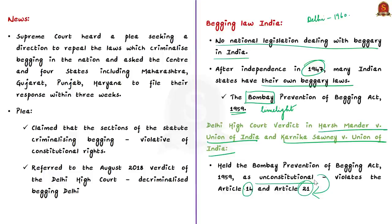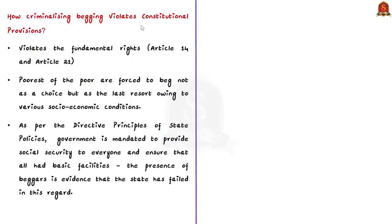Criminalizing begging violates the fundamental rights of the most vulnerable people in our society. It also ignores the reality that the poorest of the poor are forced to beg not as a choice but as a last resort owing to various socio-economic conditions. As a recent plea has noted, it is the government which is mandated to provide social security to everyone and to ensure that all have basic facilities as embedded in the Directive Principles of State Policy of our Constitution. However, the presence of beggars is evidence that the state has failed to provide these basic facilities to all its citizens.